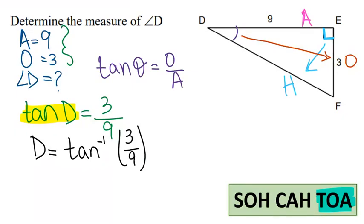This is where you are going to use the second function on your calculator, and you need to make sure your calculator is in degree mode, not radians. Press the second function key, then press the tan key, and then enter 3 over 9. Angle d equals 18.4 degrees.